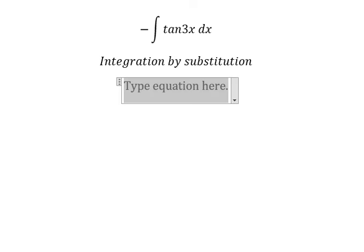So I will put u equals to 3x. Later we do first derivative for both sides. Because we don't have number three outside in here, so we need to divide both sides by positive number three.